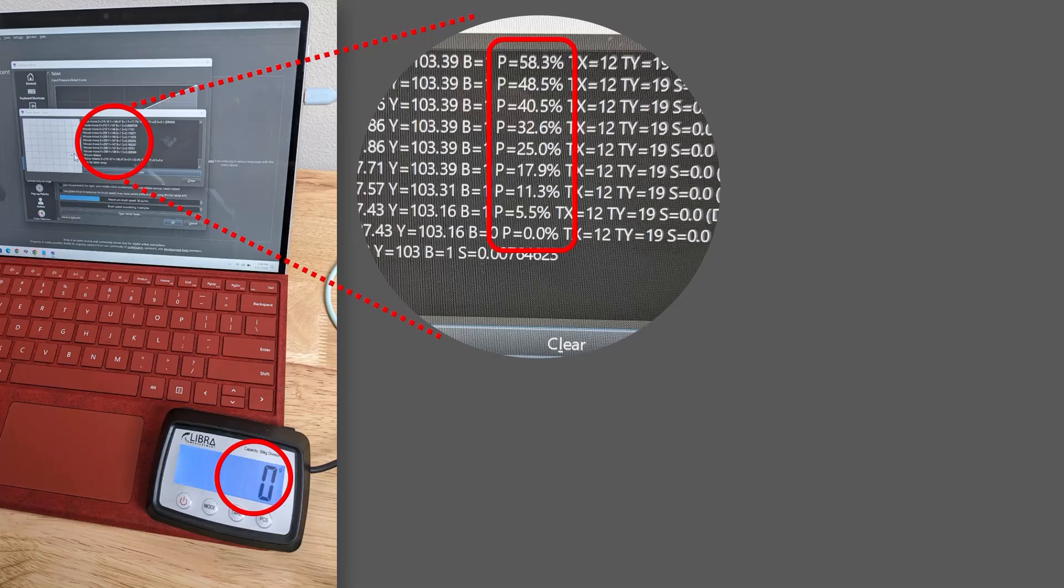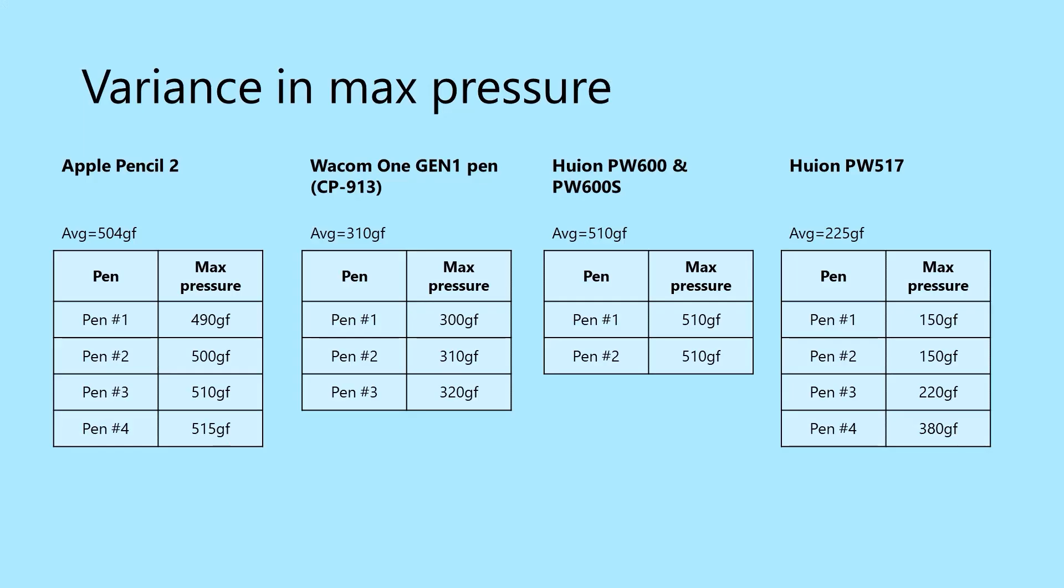Something that I noticed as I started looking at physical pressure with my EMR pens is that there is a bit of variance in the measurements. Now, some variance is due to the equipment I use or my measuring methodology.